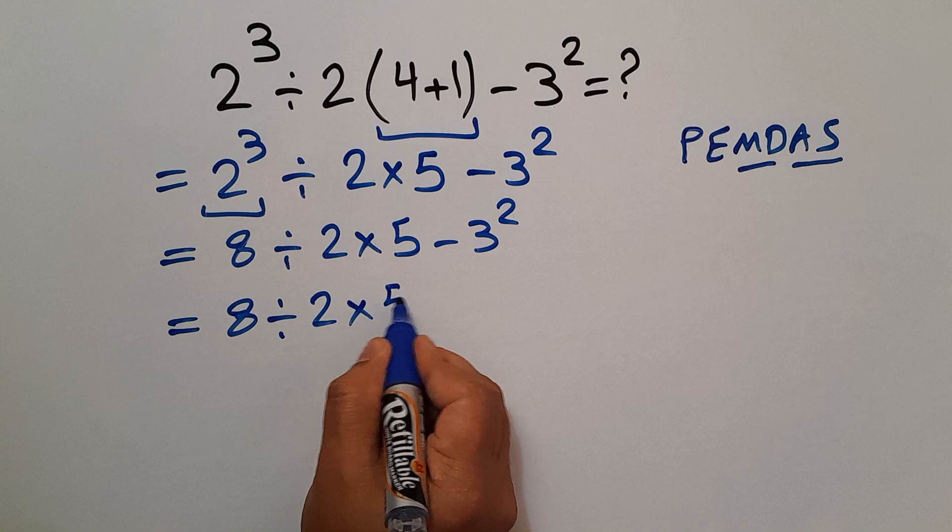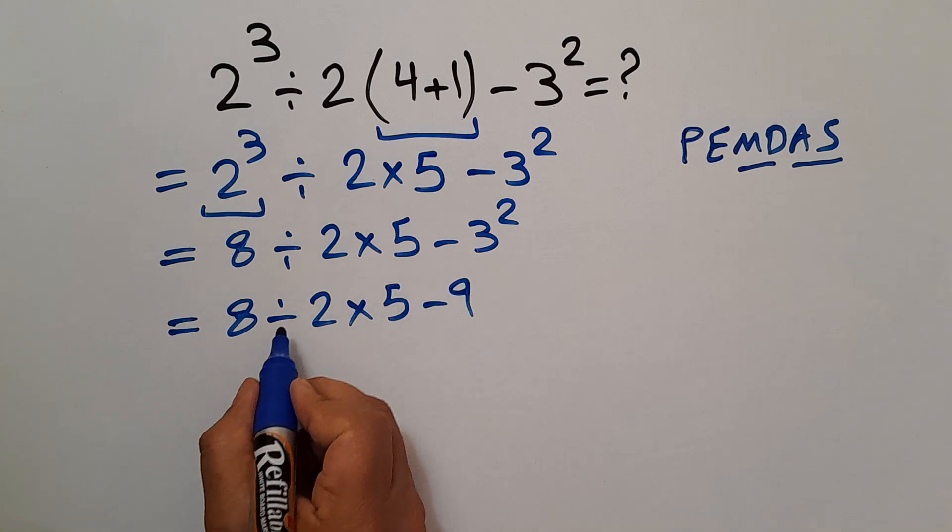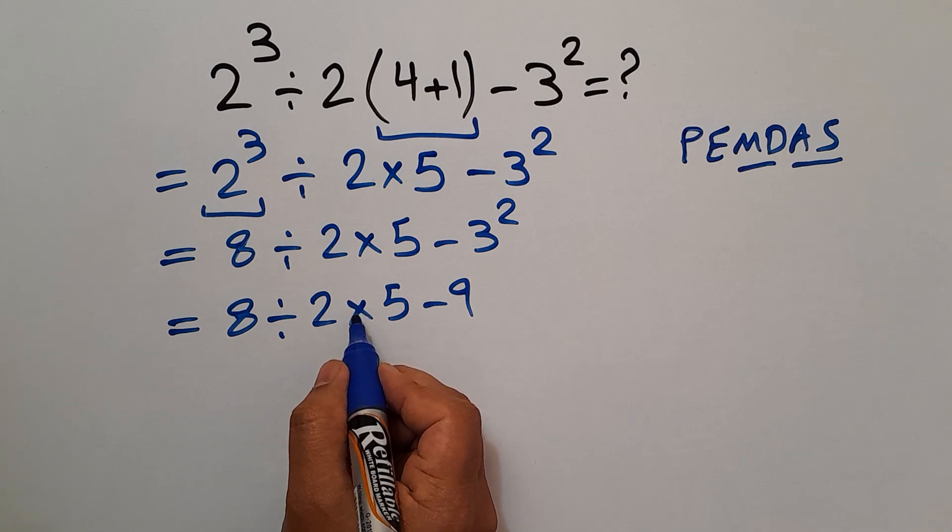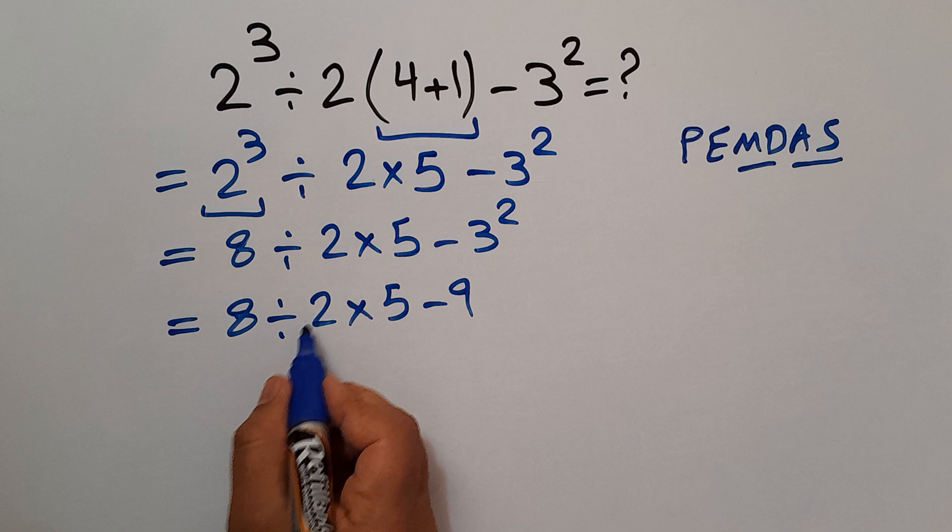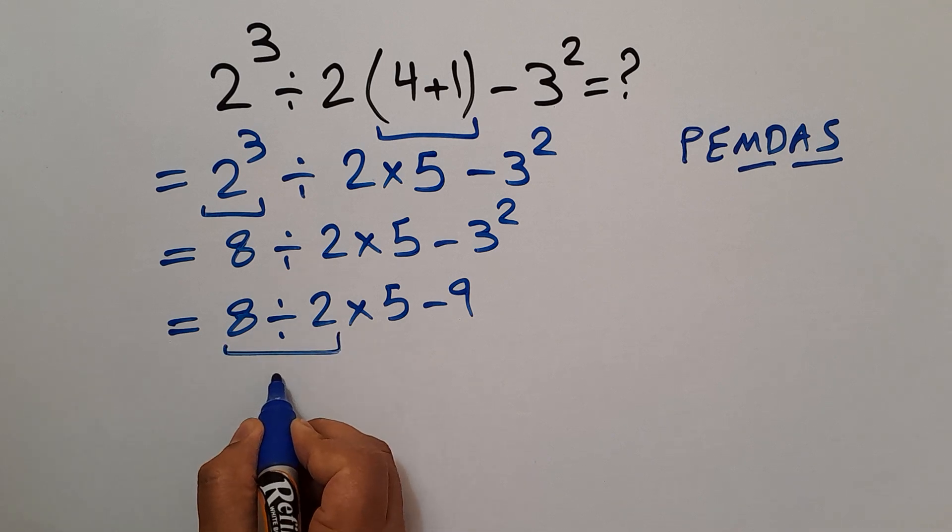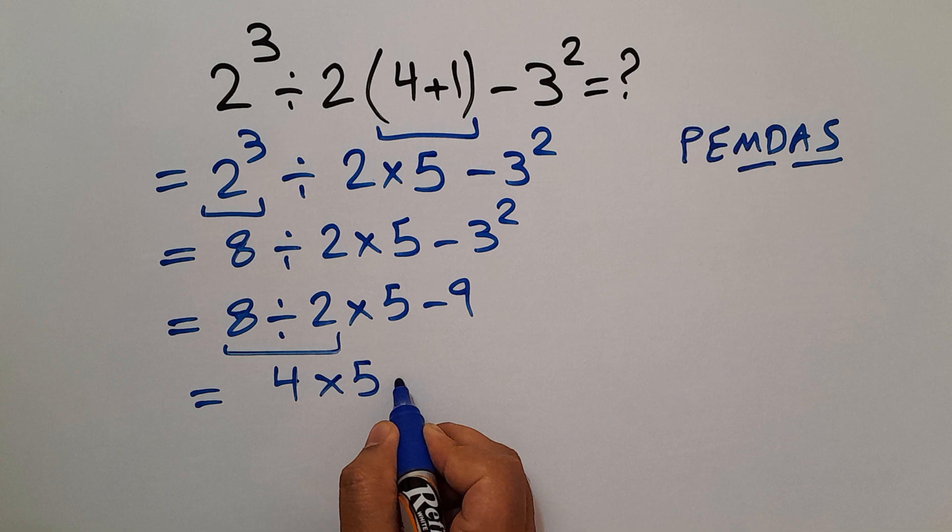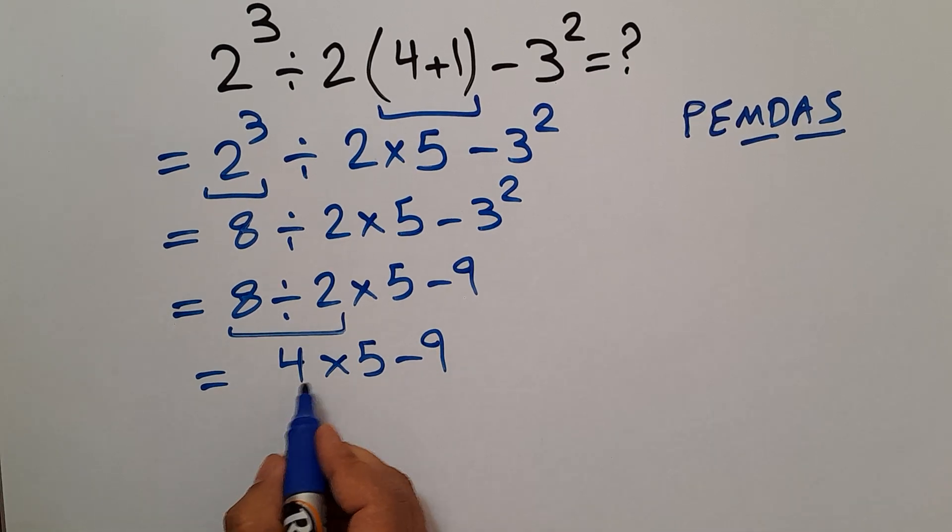Now, division and multiplication have equal priority and we have to work from left to right. So first, 8 ÷ 2 which equals 4, so 4 × 5 - 9. 4 times 5 equals 20.